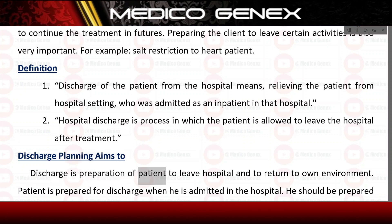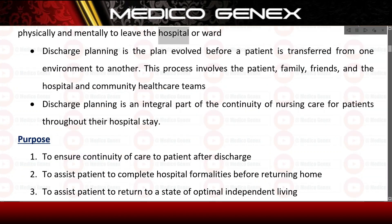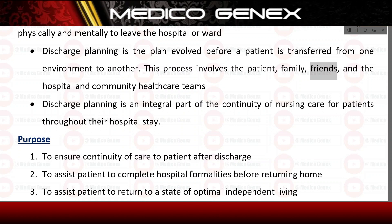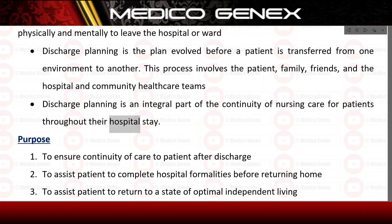Discharge Planning Aims: Discharge is the preparation of the patient to leave hospital and return to their own environment. The patient is prepared physically and mentally to leave the hospital or ward. Discharge Planning is the plan evolved before a patient is transferred from one environment to another. This process involves the patient, family, friends, and the hospital and community healthcare teams. Discharge Planning is an integral part of the continuity of nursing care throughout the patient's hospital stay.